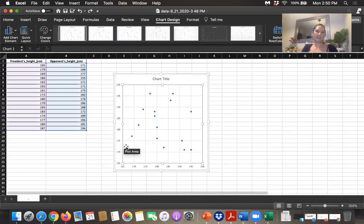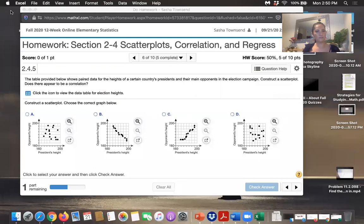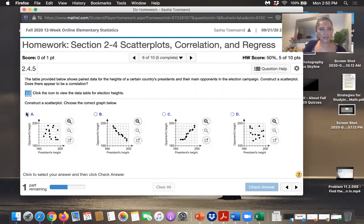Notice we've got like four data points that are going up like this and then four that are kind of coming down. And I don't see that in graph D, but I do see that in graph A. So graph A must be our scatter plot. So we'll select that one, check our answer.